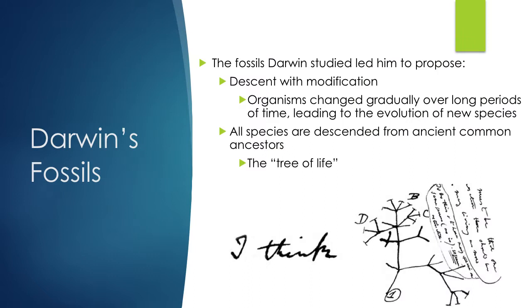Darwin also collected a lot of fossils. He was in South America right after an earthquake, which caused a fissure in the earth and revealed fossils in many different layers. Darwin had a good grasp of descent with modification — meaning organisms changed gradually over long periods of time, leading to the evolution of new species. This contributed to his idea of the tree of life, where one originating organism gave rise to a boom of life and gradual evolution producing the different branches on that tree.